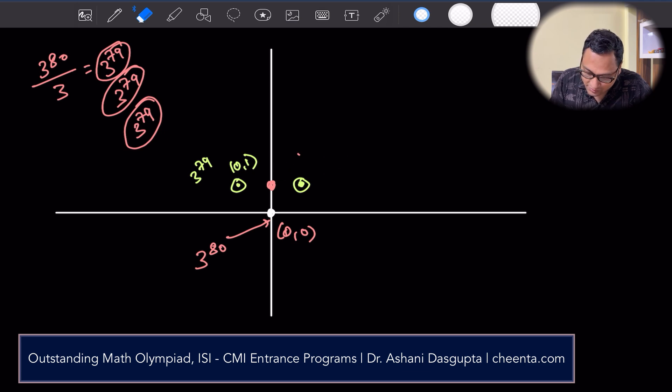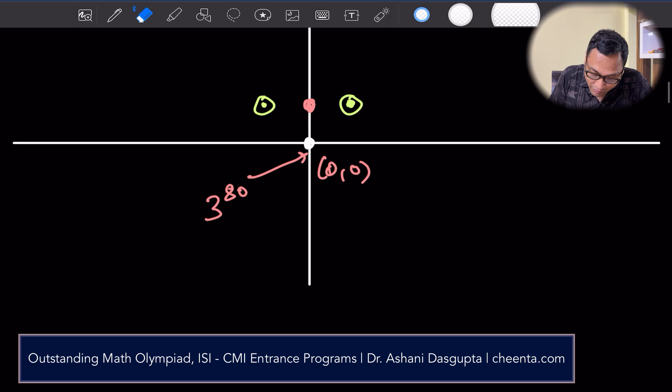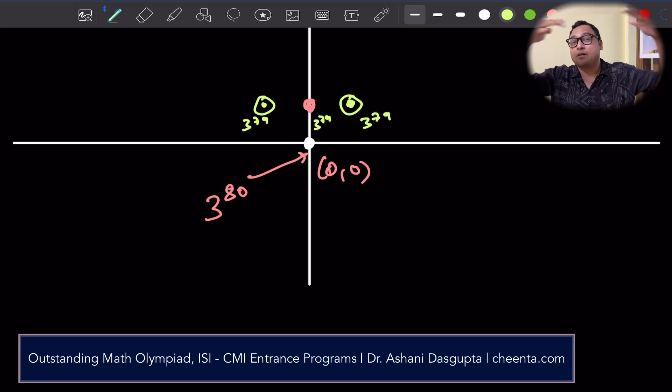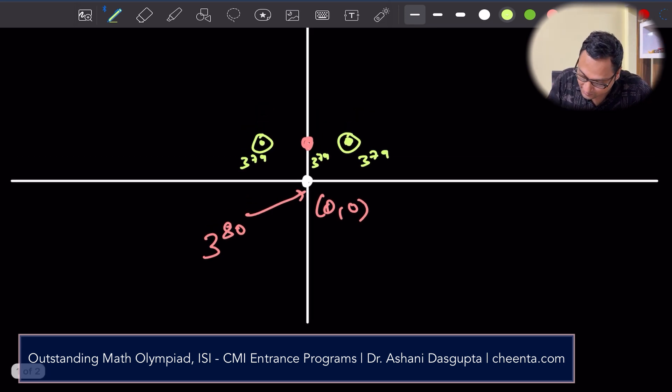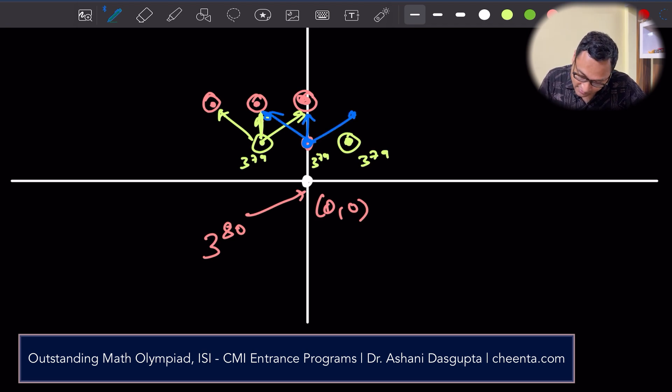I just delete all these things again. So similarly, what happens in step two? Well, let me just delete everything. So here we have 3 to the power 79 in each position. So again, one third goes to the top, right to the top here, to the left here, and to the right here. So this one goes three ways. Similarly, this one goes three ways. And this one goes three ways. Okay. So that's great. So each of them is 3 to the power 78. Again, because if you split 3 to the power 79 into three parts, you will get 3 to the power 78.